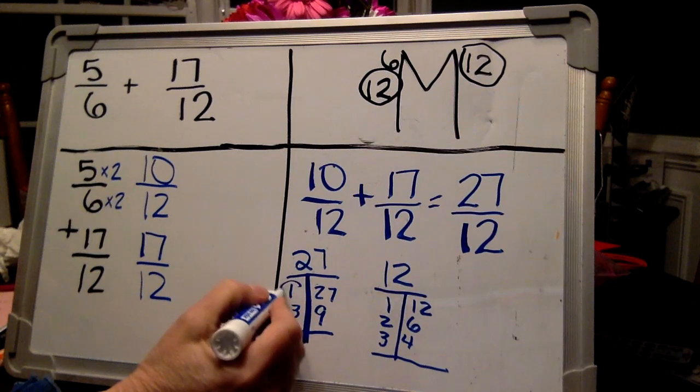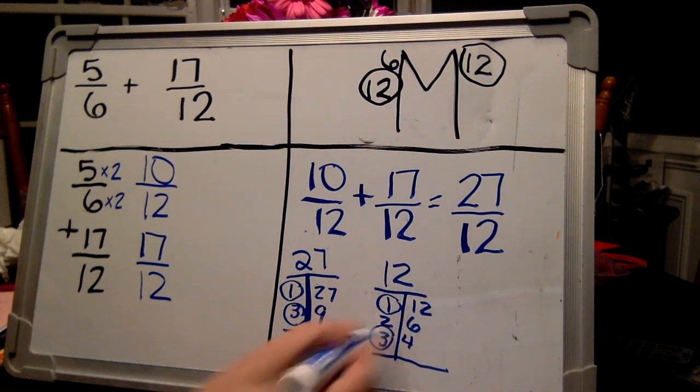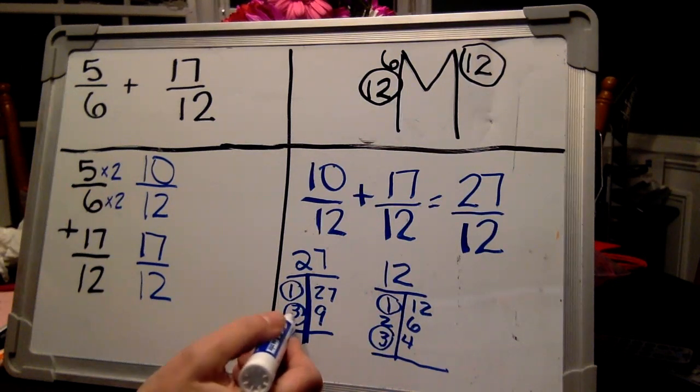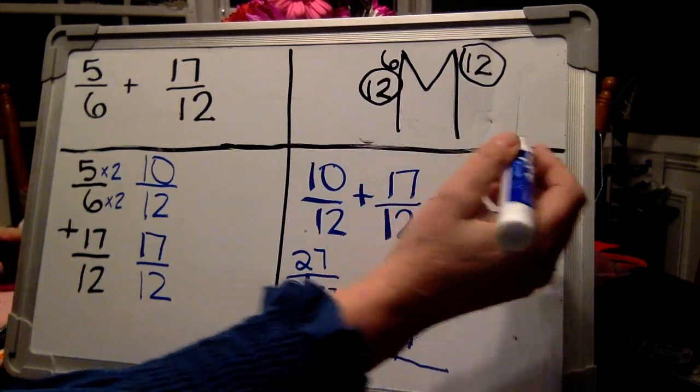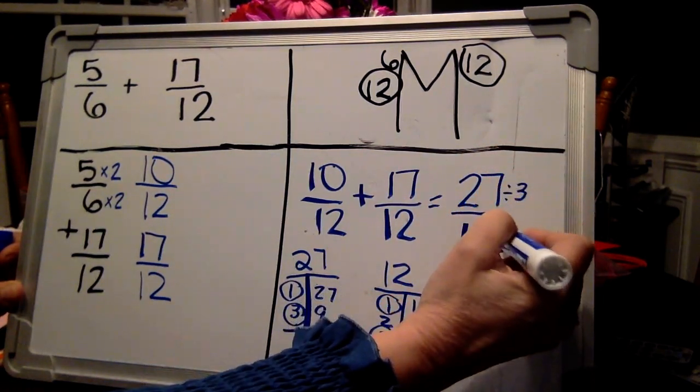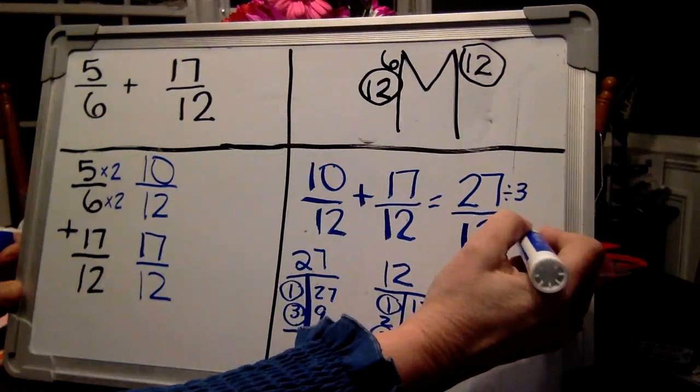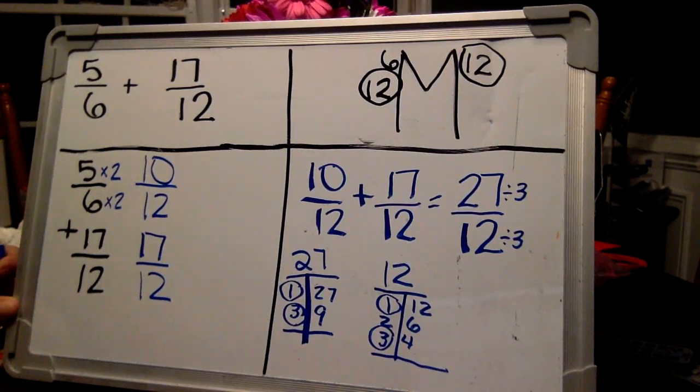All right, our common factors are 1 and 3. So we're going to use our greatest common factor of 3. We're going to divide, because remember when we simplify, we want to make it smaller. And when we divide, we make things smaller. When we multiply, we make things bigger.